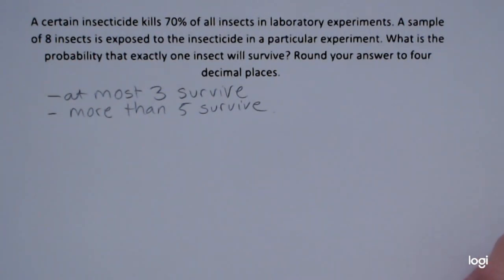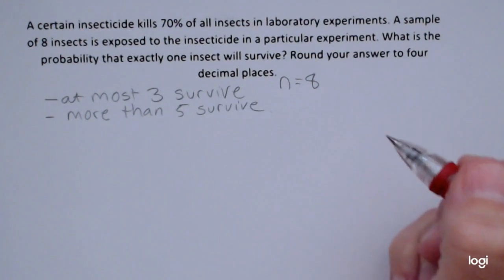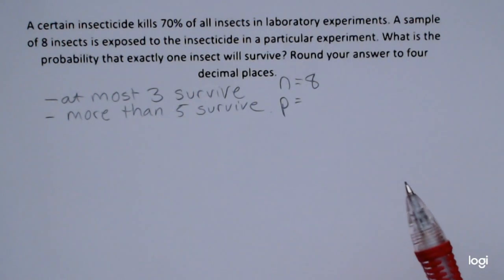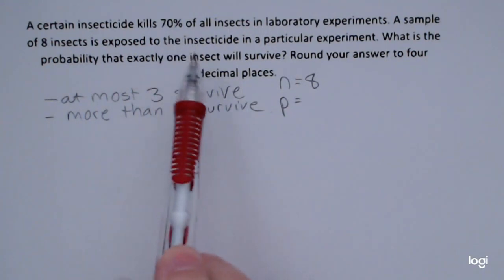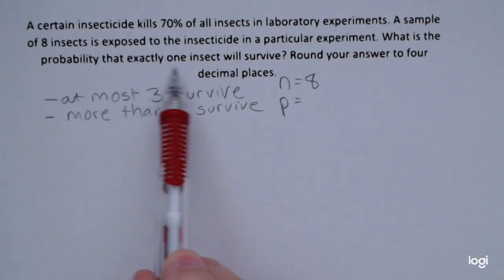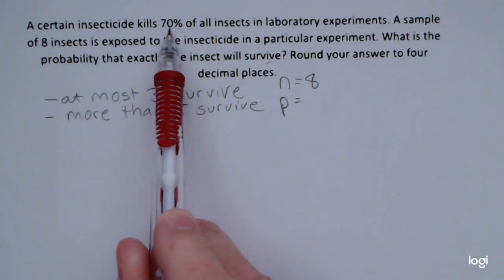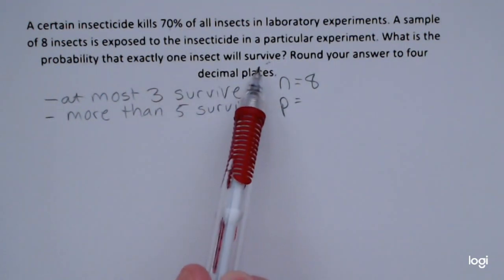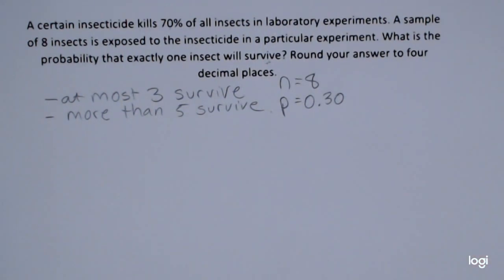First I'm going to identify the pieces that I need. I need the sample size, that's n — I have eight insects. I need the probability of success. Now this problem is a little bit sneaky. It gives 70% but that's not my probability of success, because it says 70% of all insects are killed, but they want survival. So I want to focus on the probability of survival. If the probability of the insecticide killing is 0.7, then the probability that the insecticide does not kill would be 0.3. When working a homework problem, you want to make sure that what you're looking for matches your probability of success.